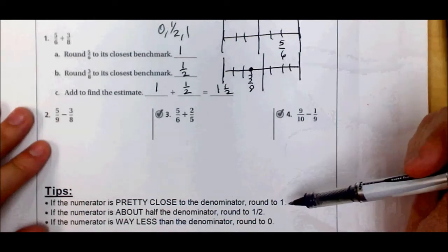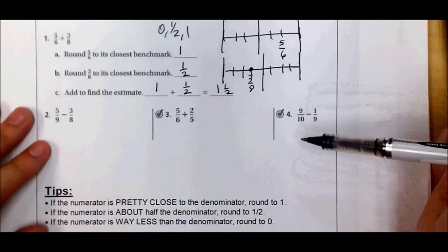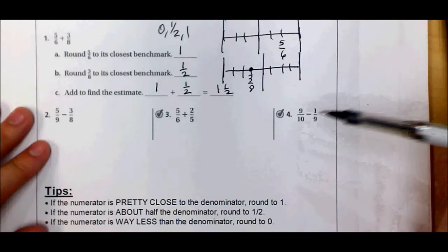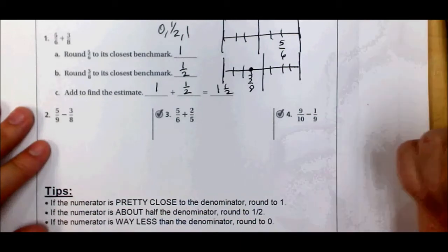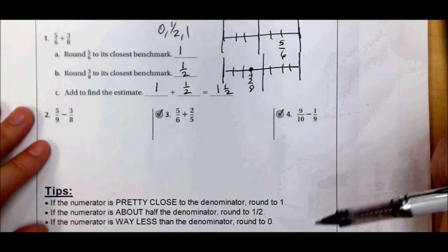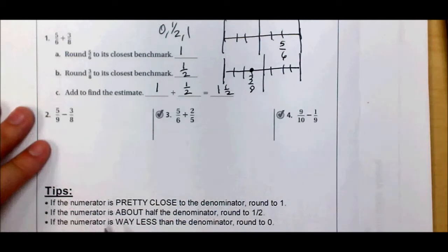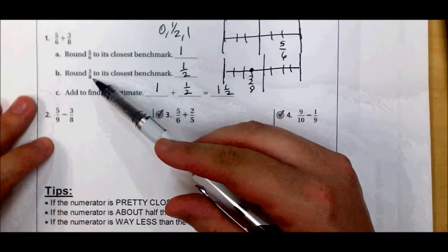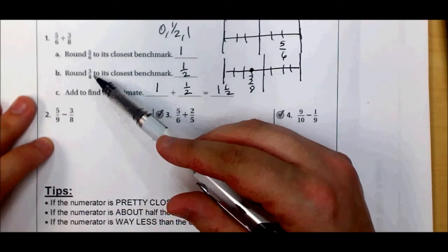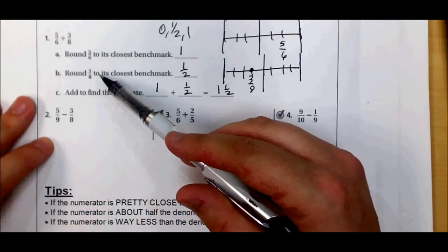For fractions smaller than one-fourth this doesn't work as well — it doesn't really work for two-thirds or three-fourths either. So for fifths and smaller, that's a good rule. Now, if the numerator is about half the denominator, you round to one-half. For three-eighths, half of my denominator would be four, so one-half would equal four-eighths. Three is really close to four, so three-eighths is close to one-half.